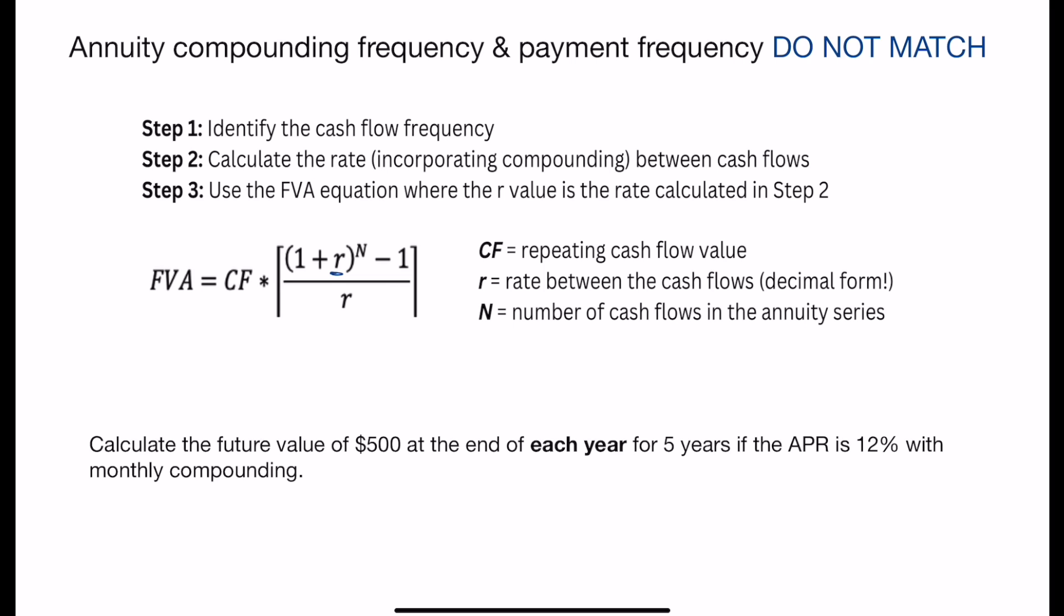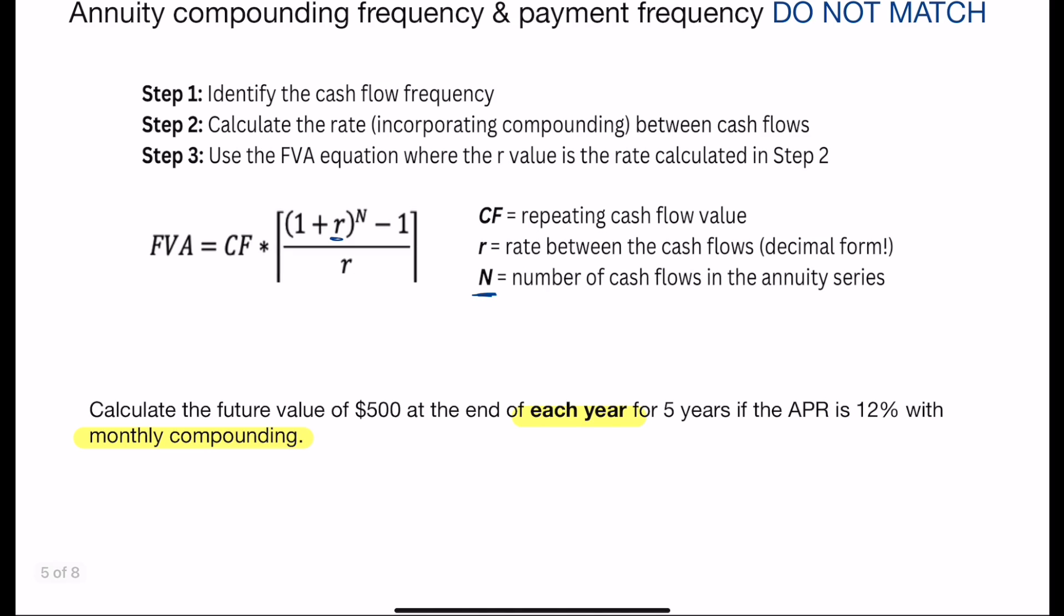Similarly to the last video, the n is still going to be the number of cash flows in the series. If we look at this first example here, we have $500 at the end of each year for five years if the APR is 12% with monthly compounding. Now first, let's just think about what this is going to look like on a timeline. So we're going to have five cash flows total.